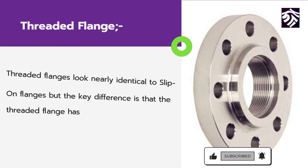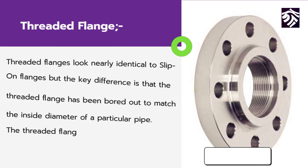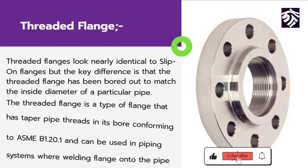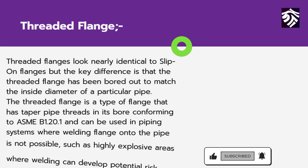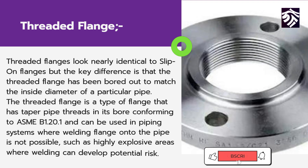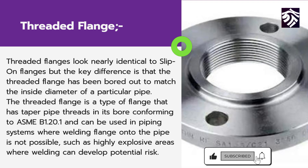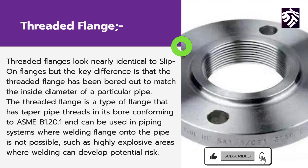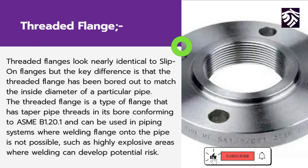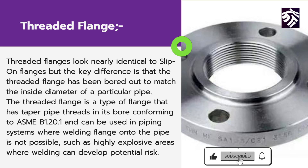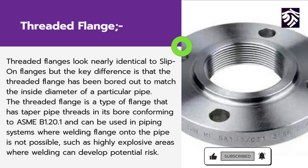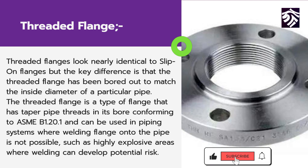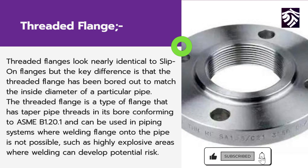Another common type of flange is the threaded flange. Threaded flanges look nearly identical to slip-on flanges, but the key difference is that the threaded flange has been bored out to match the inside diameter of a particular pipe. The threaded flange has tapered pipe threads in its bore conforming to ASME B1.20.1, and can be used in piping systems where welding the flange onto the pipe is not possible, such as in highly explosive areas where welding can develop a potential risk.